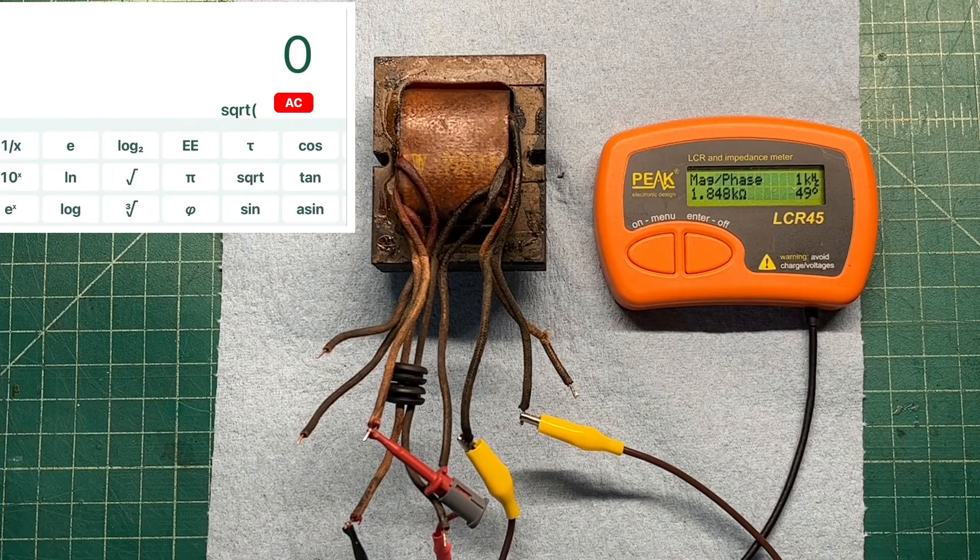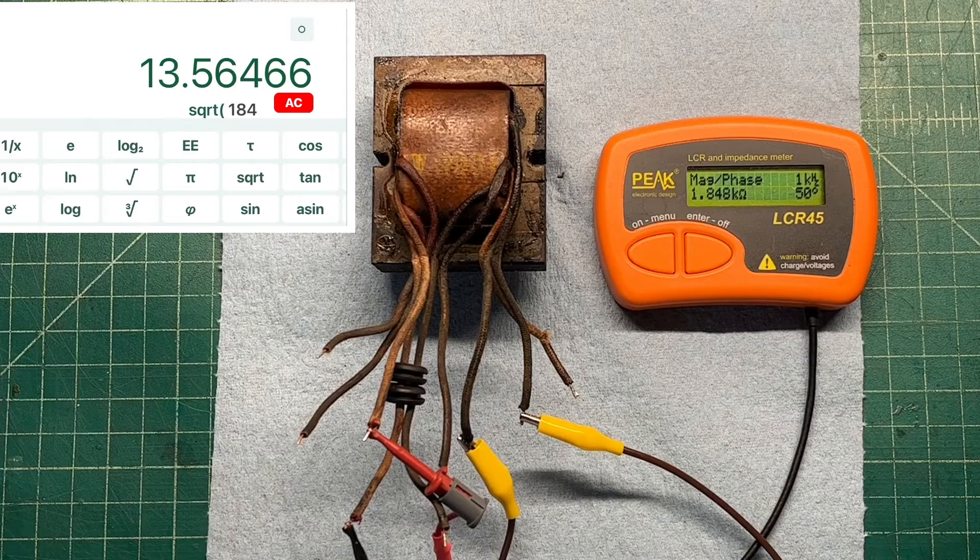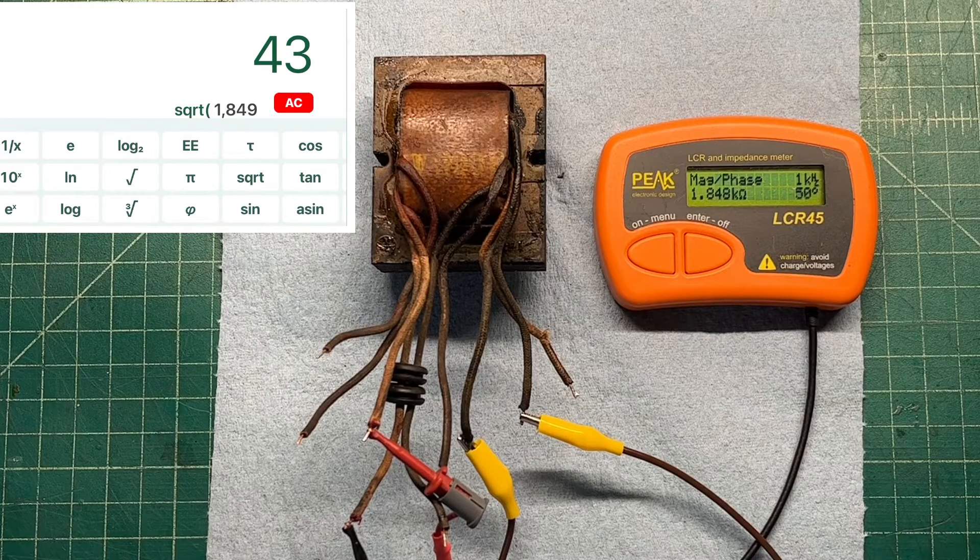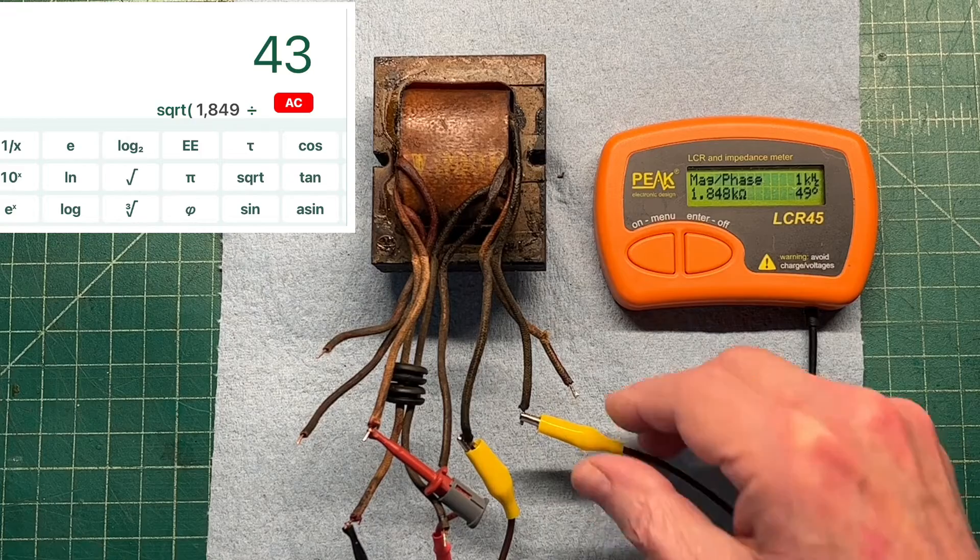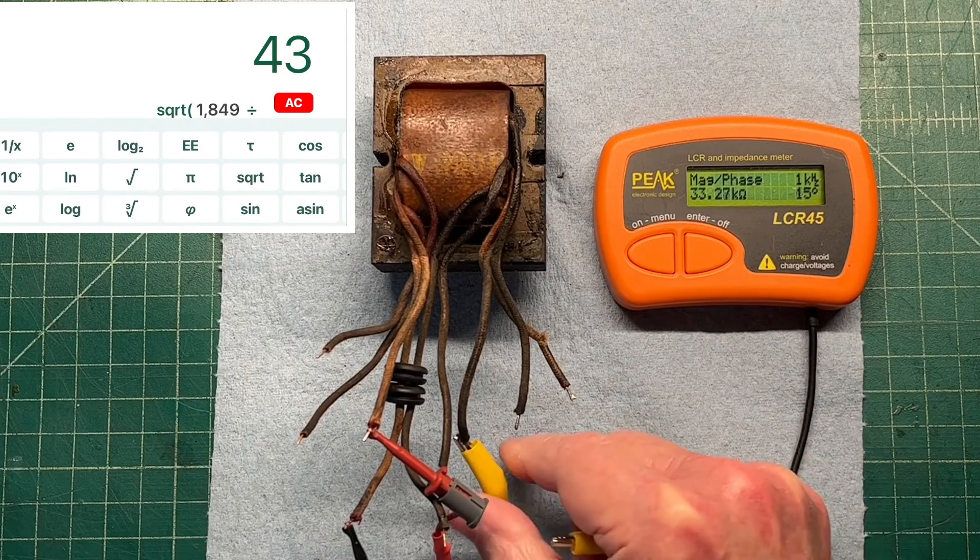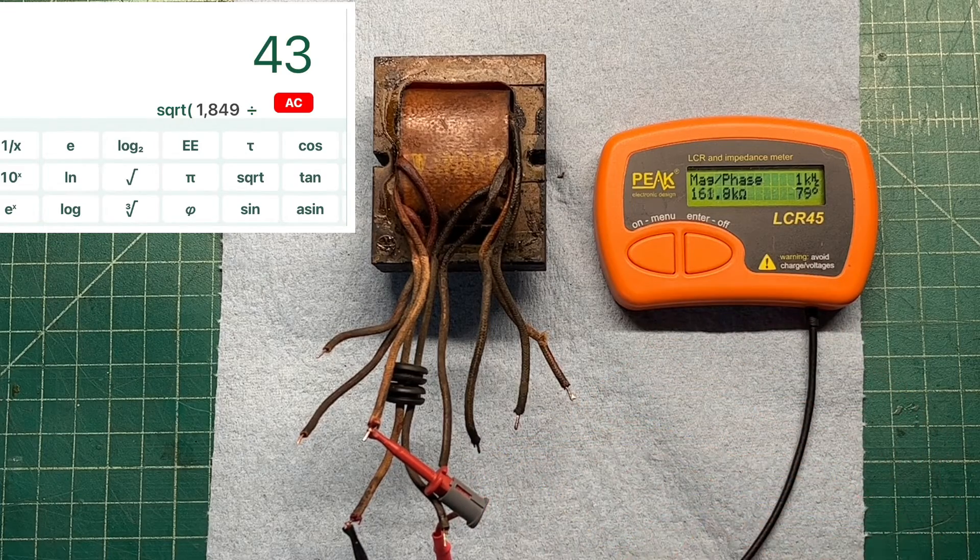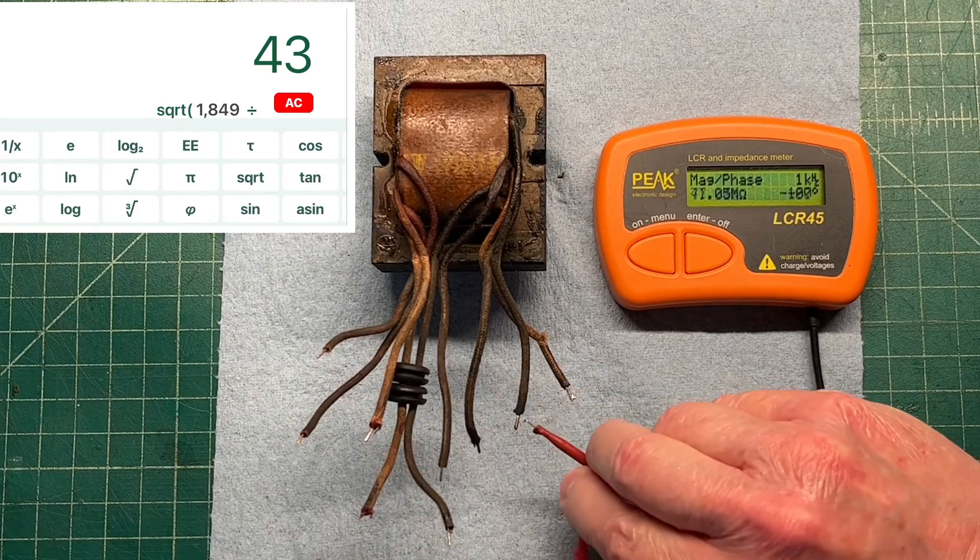So we'll plug that into the calculator. You can see I'm using the square root of 1849. We'll divide that now by the leakage inductance of the primary itself.